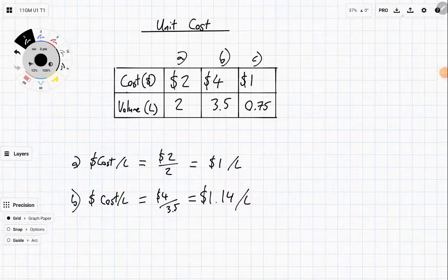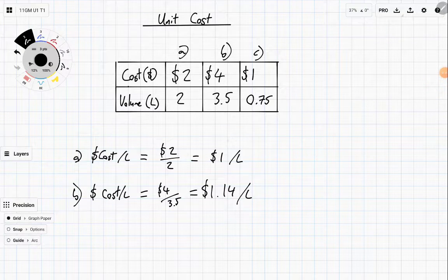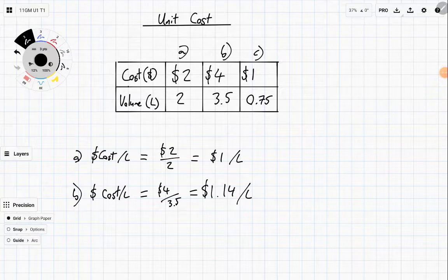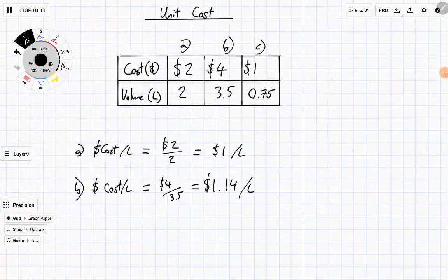Option B is more expensive per litre than Option A. Even though you get more milk for it than Option A, you'd be better off buying—if you're just going for sheer price, you'd be better off just buying A.